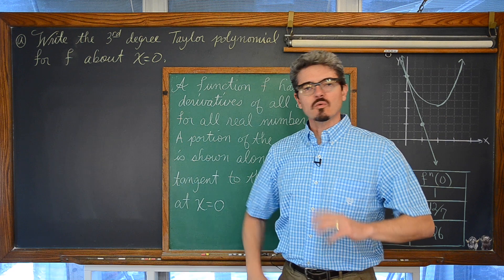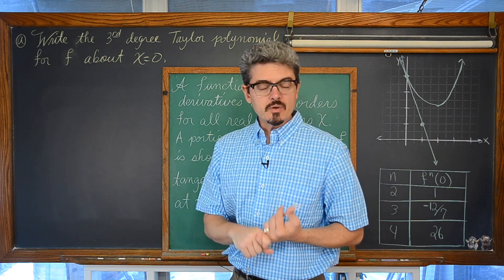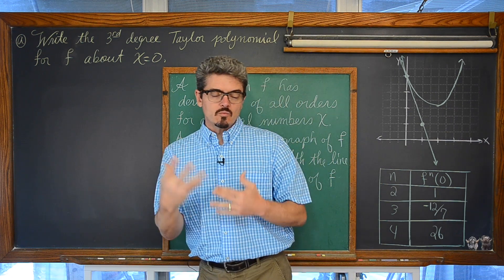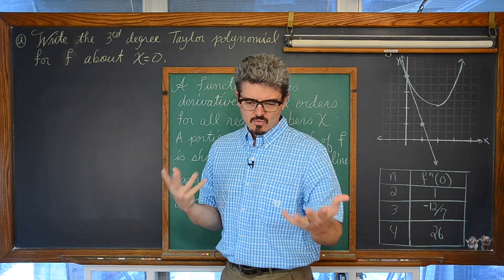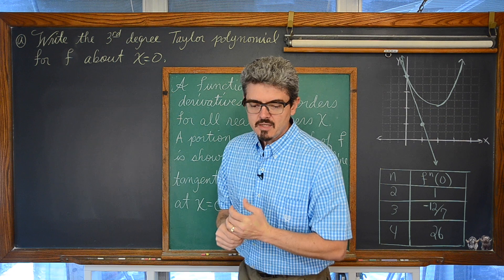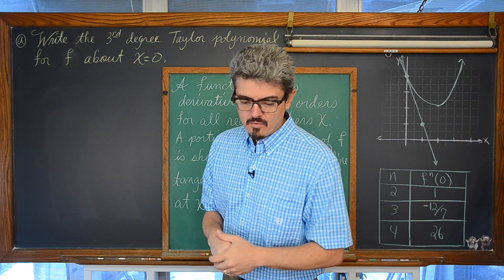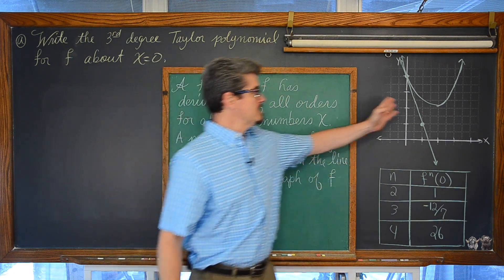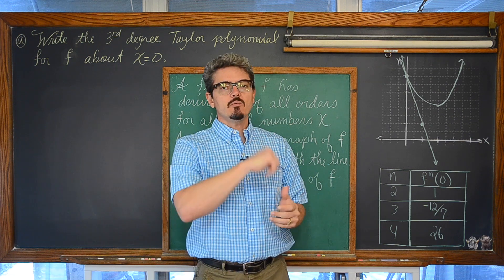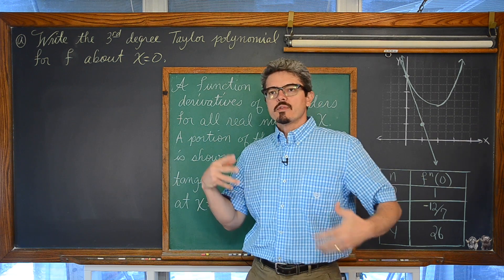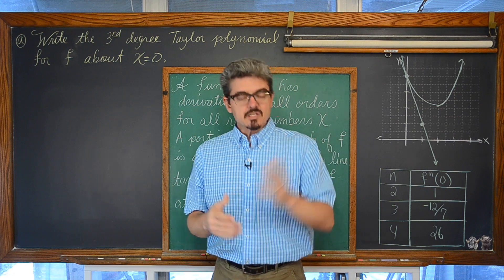Mr. Tarrou. In this calculus lesson we are going to be looking at a four-part question. Part A involves writing a third-degree Taylor polynomial. Part B involves writing the first three non-zero terms of the Maclaurin series — essentially a product of a couple of Maclaurin series. Part C is evaluating or estimating some function at a value using the Taylor polynomial from part A. Part D involves finding the upper bound of the error using the alternating series error theorem.